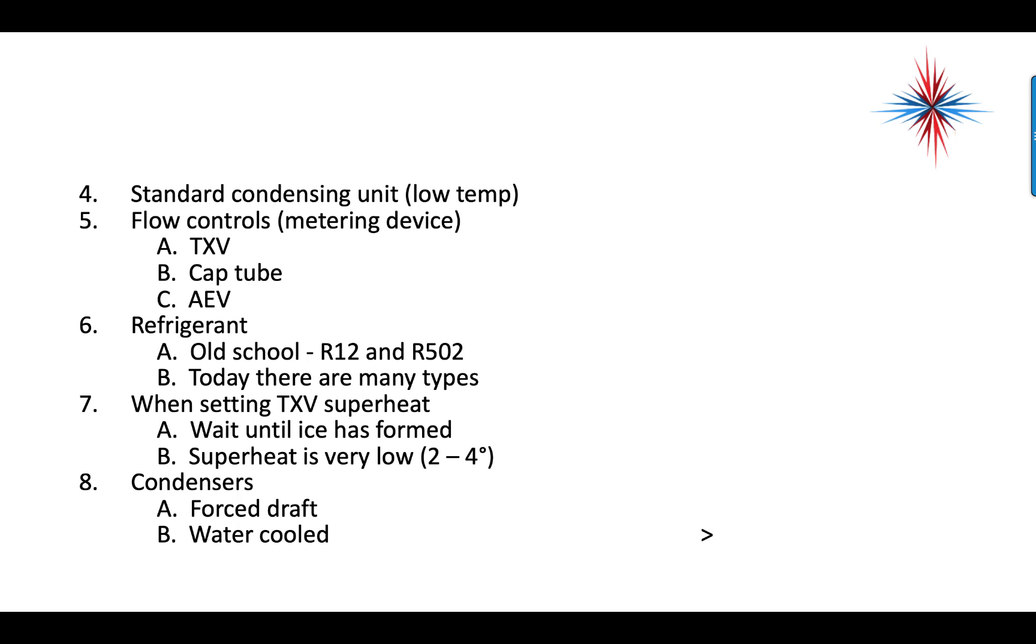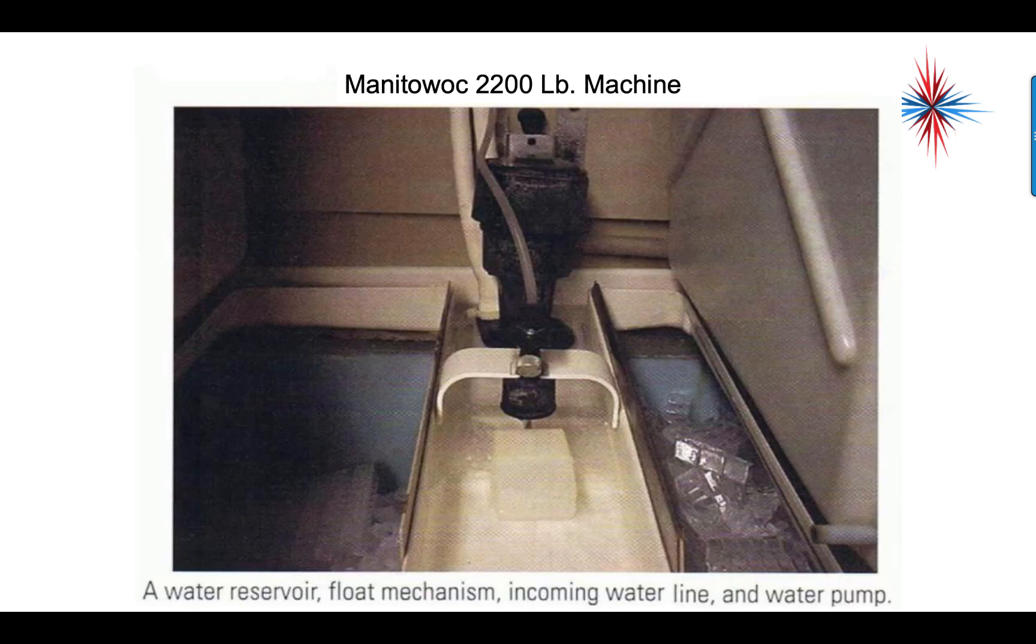When setting TXV superheat, you have to wait until the ice has formed. Superheat is going to be very low, 2 to 4 degrees. Condensers are usually forced draft or water-cooled.